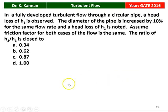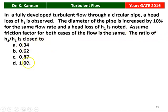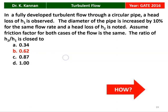The next question is from the 2016 question paper. In a fully developed turbulent flow through a circular pipe, a head loss of H1 is observed. The diameter of the pipe is increased by 10% for the same flow rate and the head loss H2 is noted. Assuming the friction factor for both cases is the same, the ratio H2/H1 is close to 0.62.